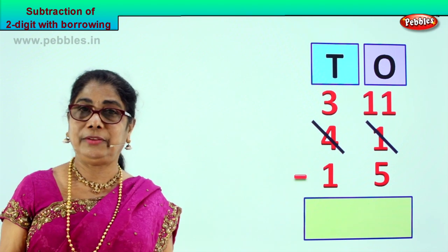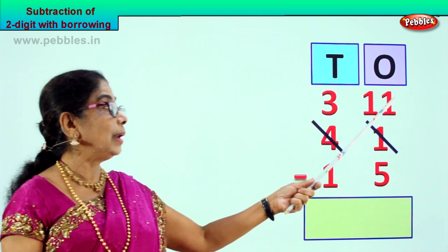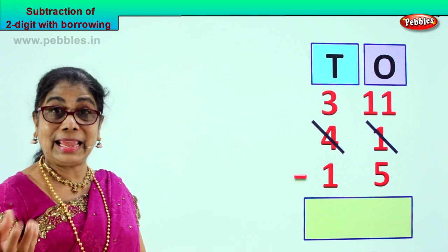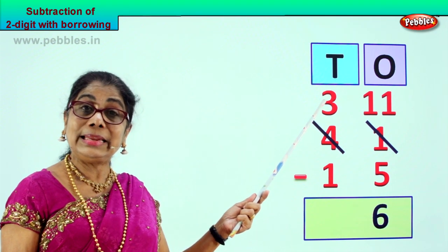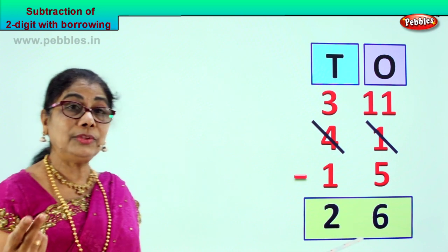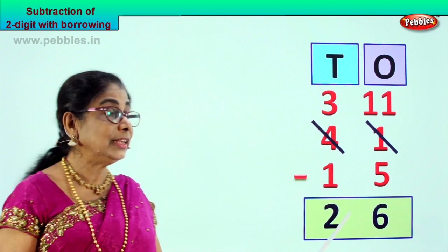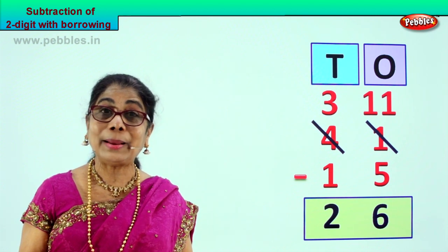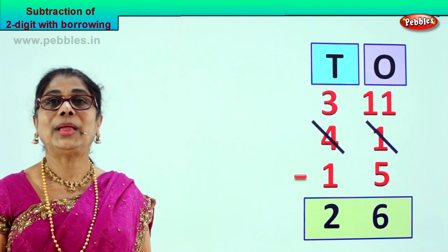Now we finish borrowing 1 ten. Now 11 take away 5 — from 11 take away 5 is 6. When you take away 5 from 11, you get 6. The balance is 6. Now here — 3 tens minus 1 ten is 2 tens, so you get 2. Your answer is 26. 41 minus 15 gives you 26. Now you learn 2 digit subtraction by borrowing method.